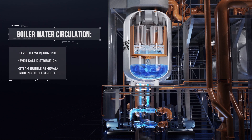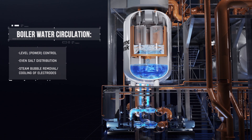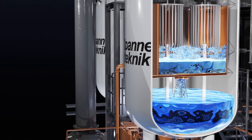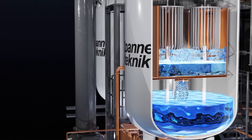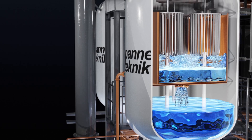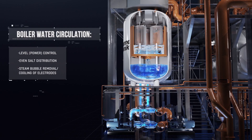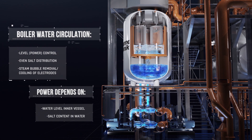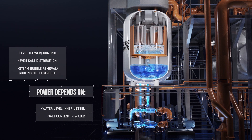The purpose of the circulation is to achieve an even distribution of salts in the water, needed to make the water conductive for steam production. The circulation also removes steam bubbles from the electrodes to improve operating conditions. The power of the boiler depends on the water level in the inner vessel and the conductivity of the water.